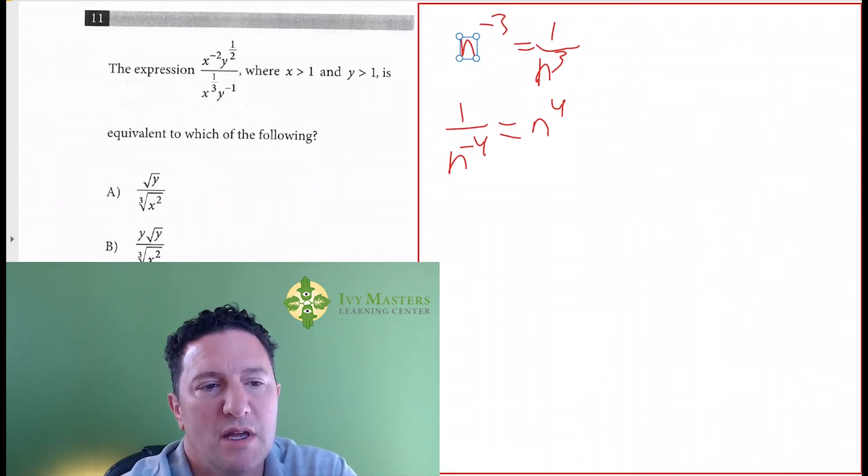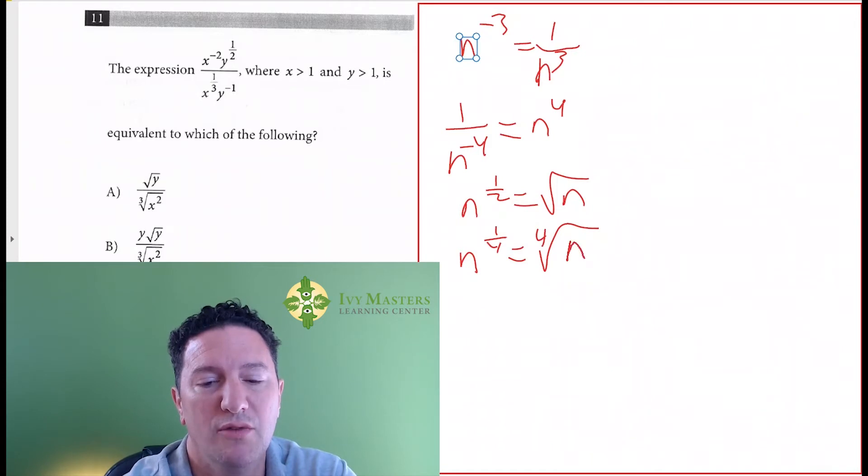What else do you need to know? You need to know that if you've got n to the 1 half, that is the square root of n. If you've got n to the 1 fourth, that is the fourth root of n.